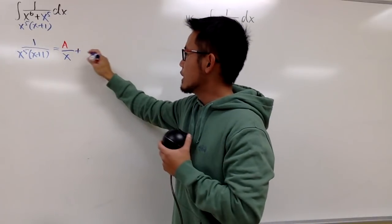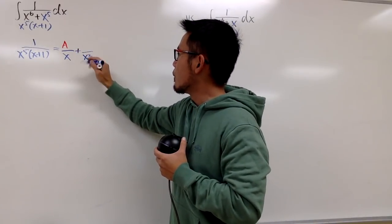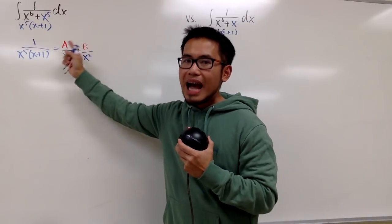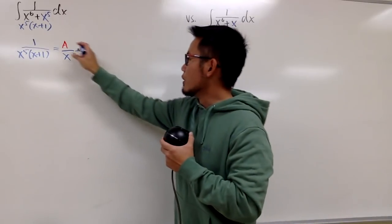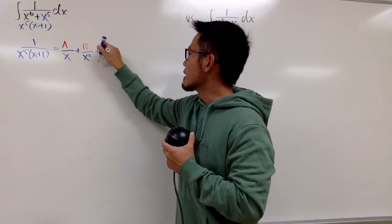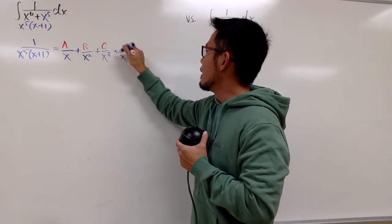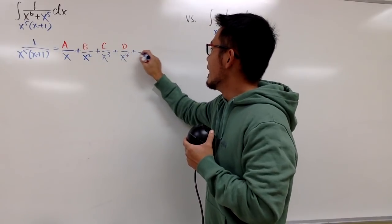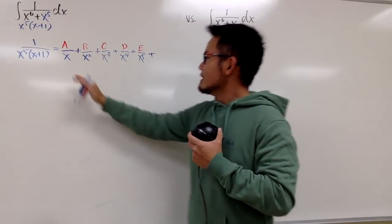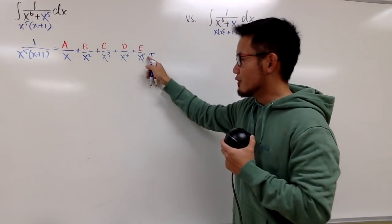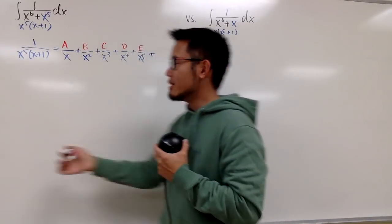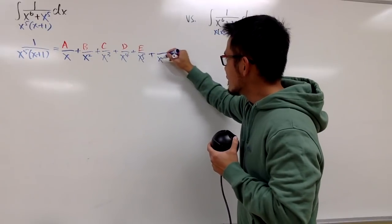The next one, I will have to keep going up: x to the 2nd power with another constant. When we build up powers, the top will have to stay the same kind — constants, constants. Then x to the 3rd power with another constant, x to the 4th power with another constant, and then x to the 5th power with one more constant. I went from x to the 1st power all the way to x to the 5th power. Don't forget we still have x plus 1, so that's just a linear factor, and on top I need another constant.